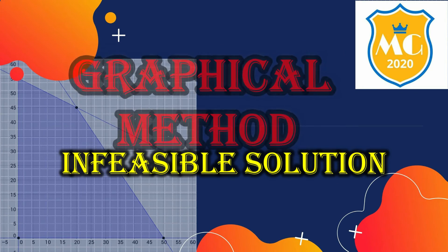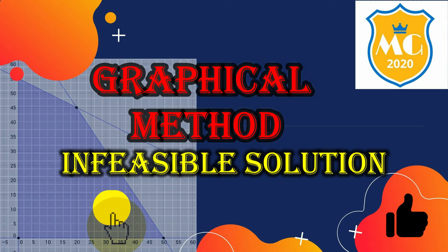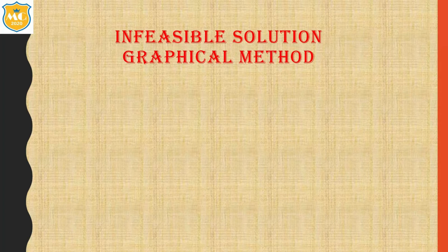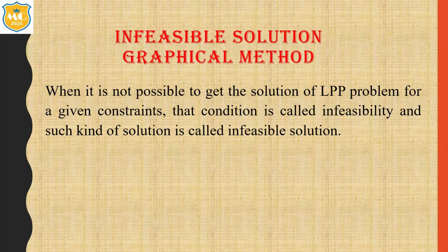If you like my video, please subscribe, press the like button, and also press the bell icon to get new notifications. First, let's understand the infeasible solution. When it is not possible to get a solution of an LPP problem for a given set of constraints, that condition is called infeasibility, and such a solution is called the infeasible solution — meaning we cannot get an optimal solution.